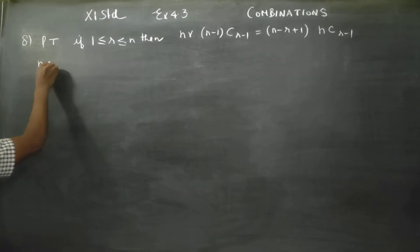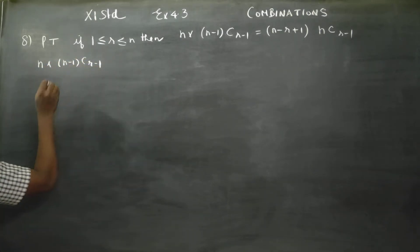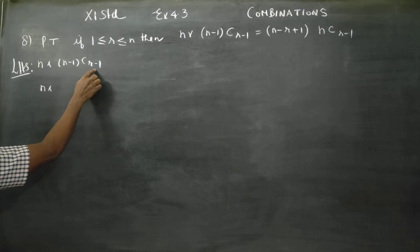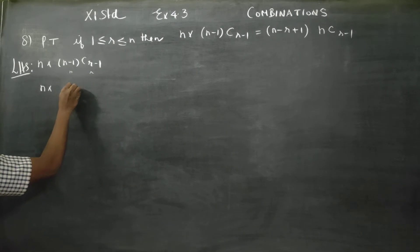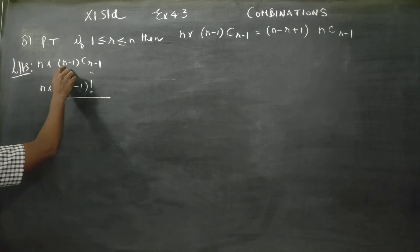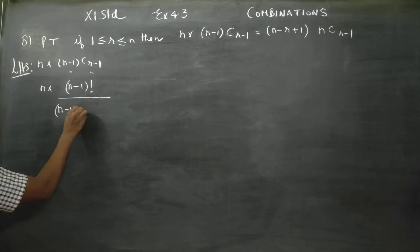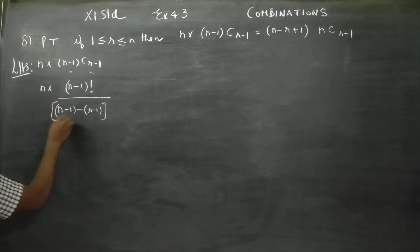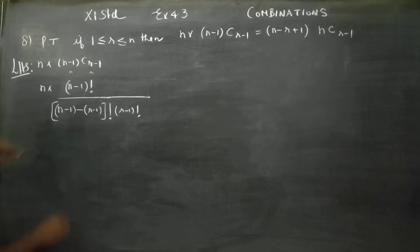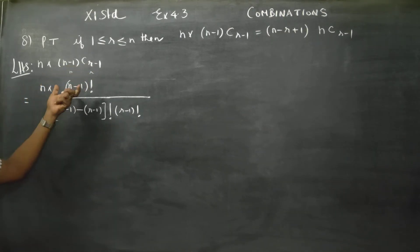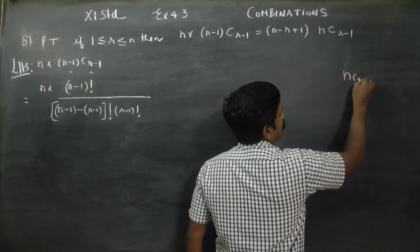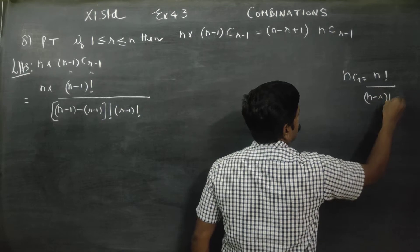We need to prove: n into n minus 1 C R minus 1. Starting from LHS. What is the formula for nCr? nCr equals n factorial by n minus R factorial into R factorial. This is the nCr formula.